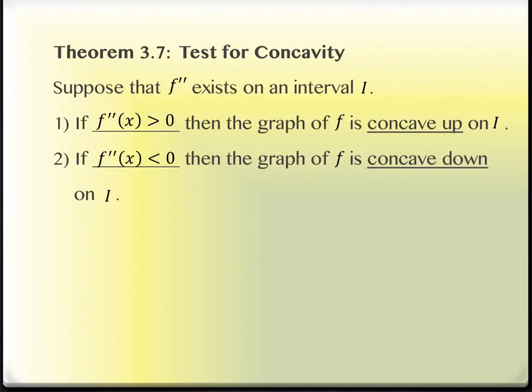Let's take a look at one more piece of information: the test for concavity. This isn't the second derivative test — we'll get there in a minute. This is a test for concavity, and this shows why we want the definition we had previously. If we have a second derivative that exists and the second derivative is positive, then the graph is concave up. And if the second derivative is negative, the graph is concave down.